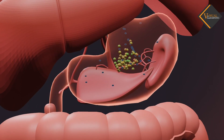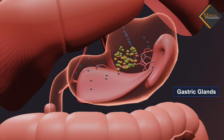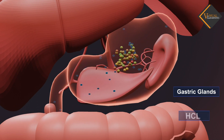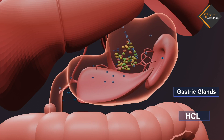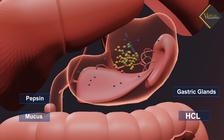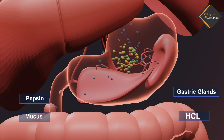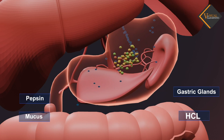The digestion in the stomach is taken care of by the gastric glands present in the wall of the stomach. These release hydrochloric acid, a protein-digesting enzyme called pepsin, and mucus. The hydrochloric acid creates an acidic medium which facilitates the action of the enzyme pepsin. The mucus protects the inner lining of the stomach from the action of the acid under normal conditions.